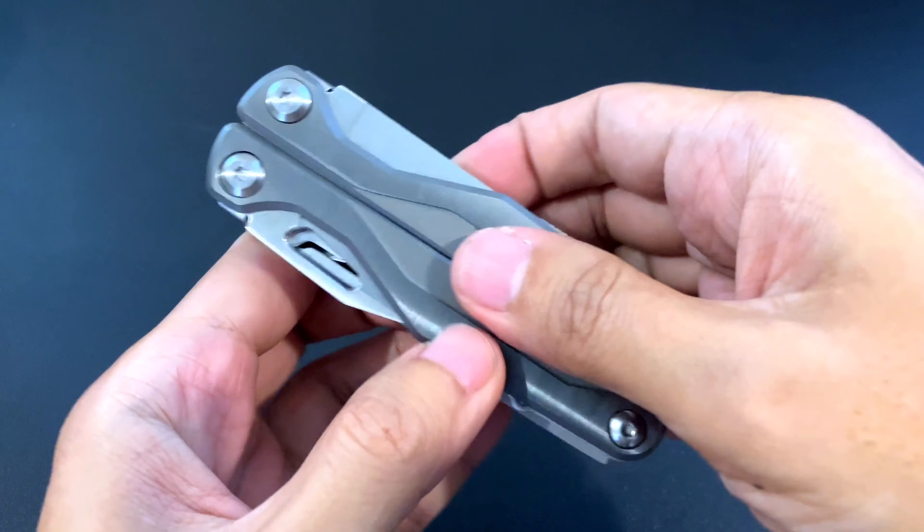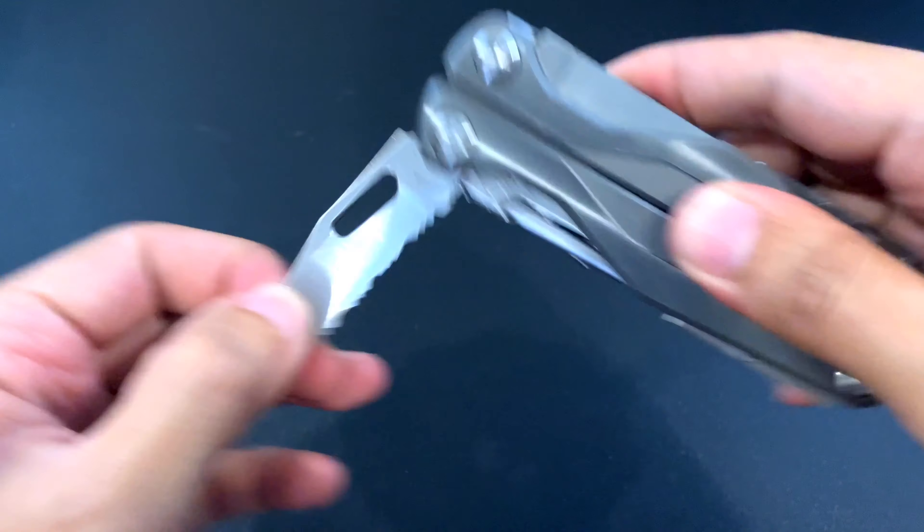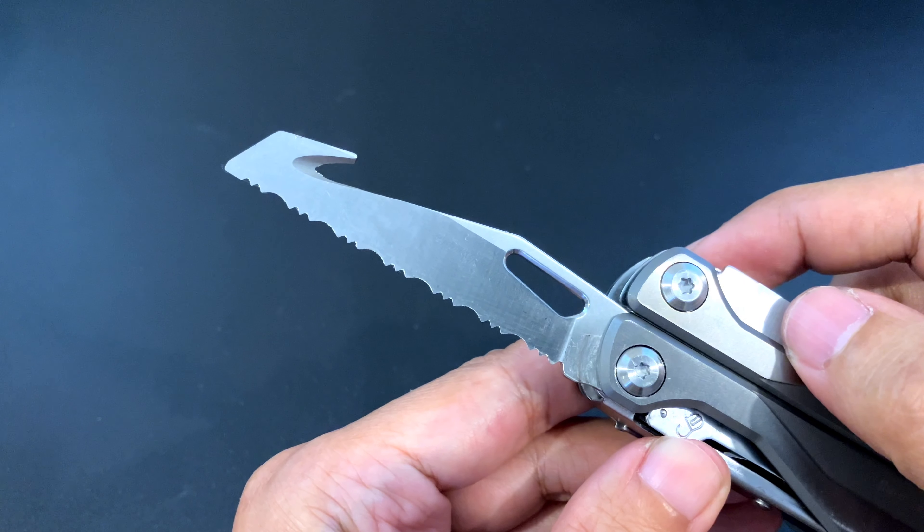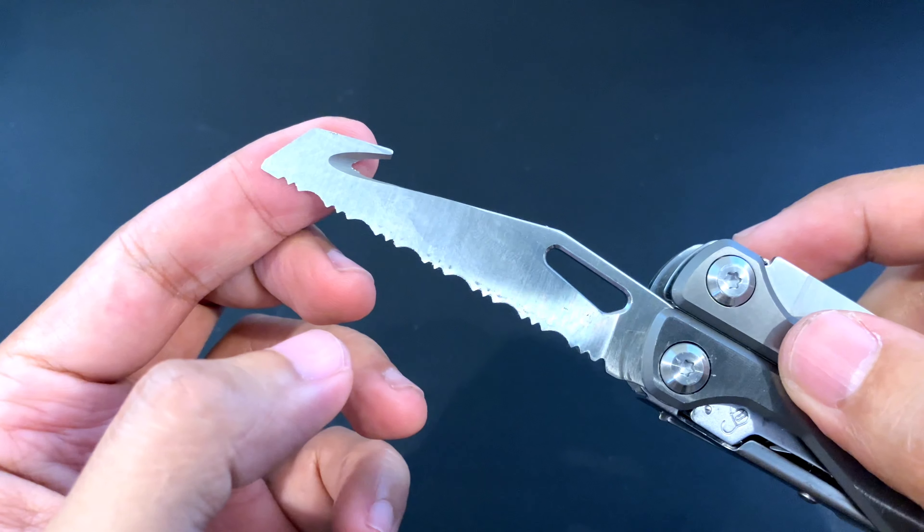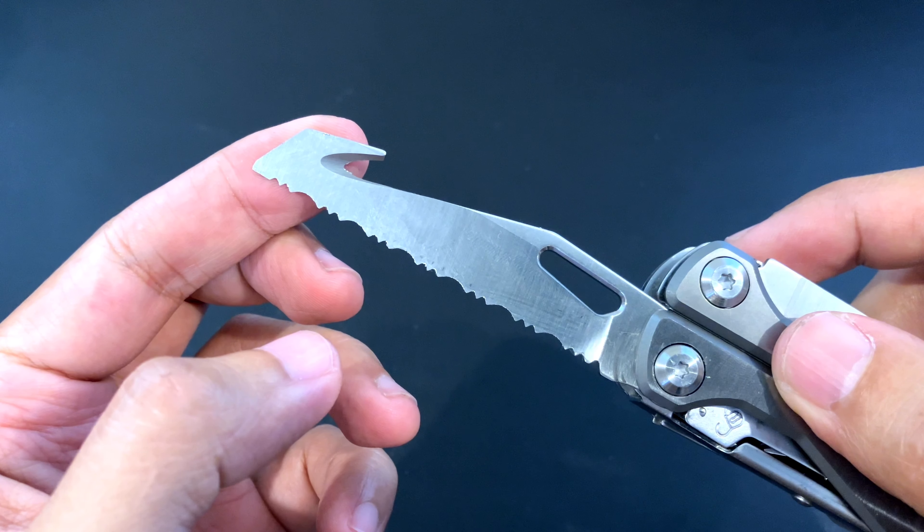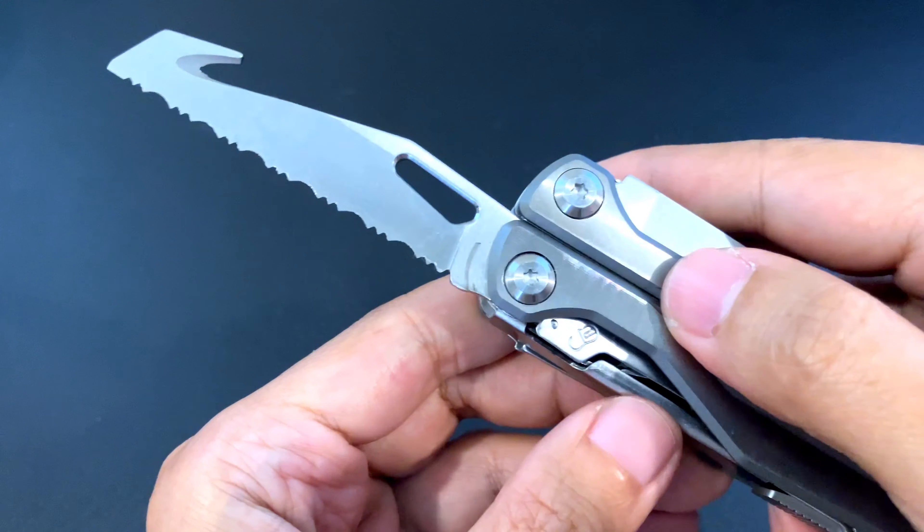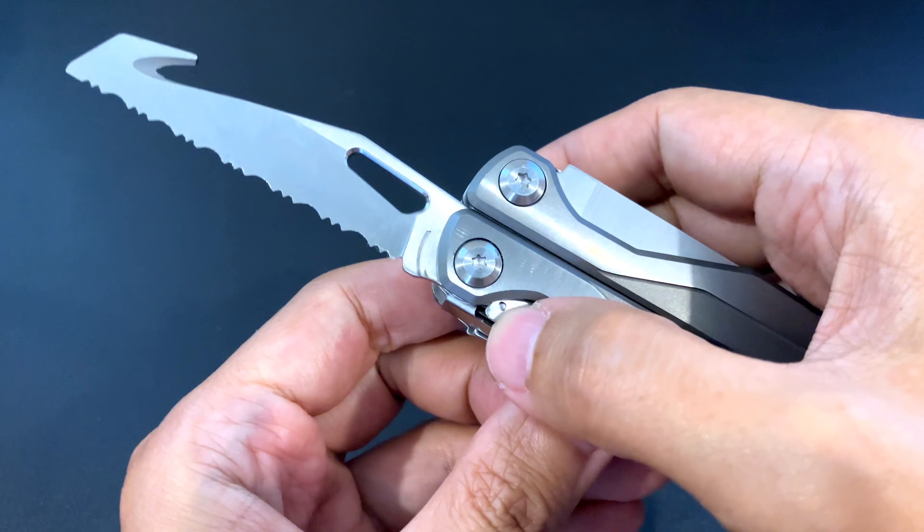On the other side we have a serrated edge blade with a gut hook at the end, just like the one on the Leatherman Charge. The same thumb hole, chamfered, and then lockable.